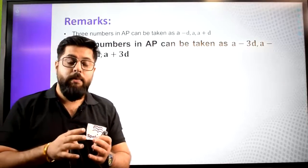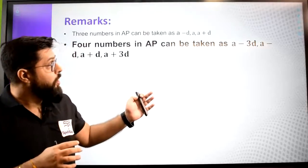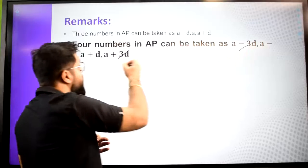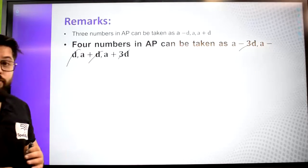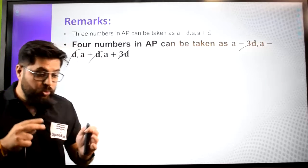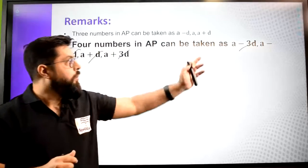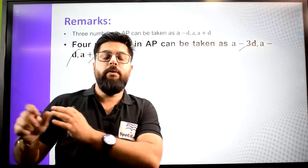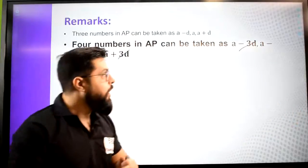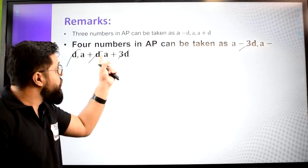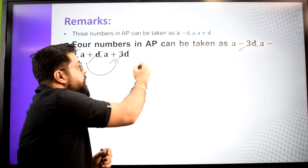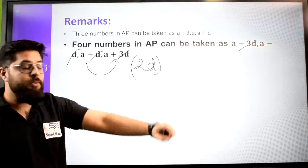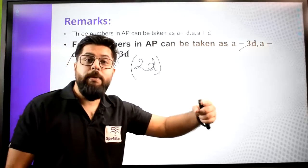Similarly, if we take 4 numbers in AP and need to find their sum, the 4 terms we take are a minus 3d, a minus d, a plus d, and a plus 3d. When we take the sum, minus 3d and plus 3d cancel, and minus d and plus d cancel, so we can easily find a. Two important things: first, this AP starts from a minus 3d. Second, notice the common difference here is not d but 2d. When you take an odd number of terms like 3, the common difference is d, but for 4 terms the common difference is 2d.